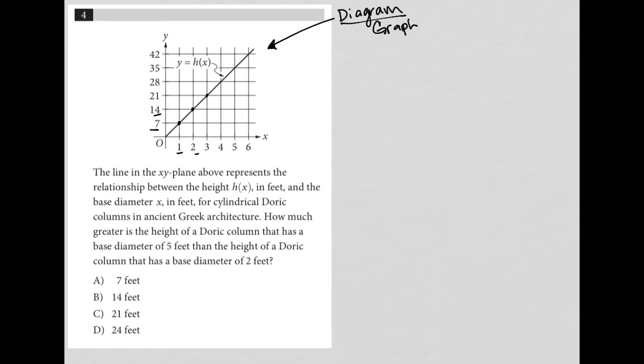Let's just read the question to see exactly what we're looking to find based upon this graph. The question says the line in the xy plane above represents the relationship between the height h(x). So h(x), f(x) is always a y value. So here's our height is the y-axis and the base diameter x in feet. So this is our diameter.